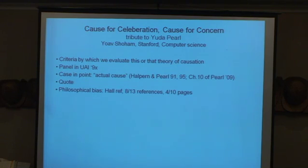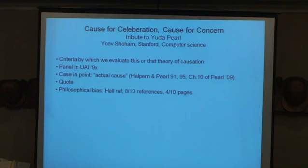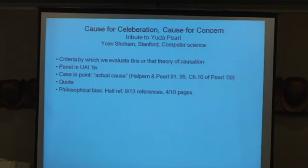If you look at the references at the end of the paper and take away all the references to papers by Pearl and or Halpern, you end up with 13 references, and eight of those are to philosophers. The paper is 10 pages long, and four of those pages are devoted to examples and showing how the theory handled the examples in an intuitively satisfactory manner.